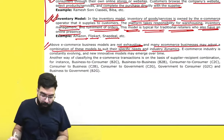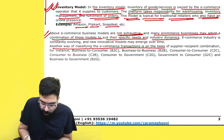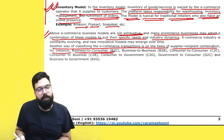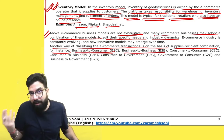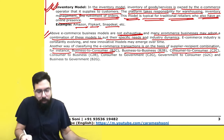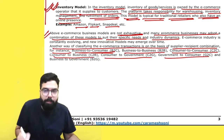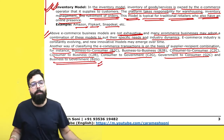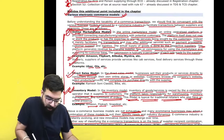The above e-commerce business models are not exhaustive — many e-commerce businesses may adopt a combination of these to suit their specific needs. Another way of classifying e-commerce is on the basis of supplier-recipient combination: Business to Consumer (Flipkart), Business to Business (Udaan), Consumer to Consumer (OLX), Consumer to Business, Consumer to Government, Government to Consumer, and Business to Government models. In your exam, please remember the three types of e-commerce models.